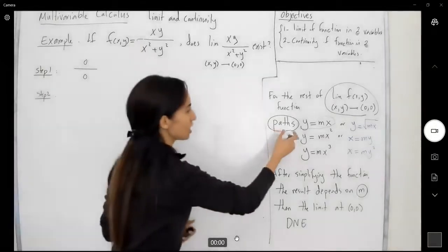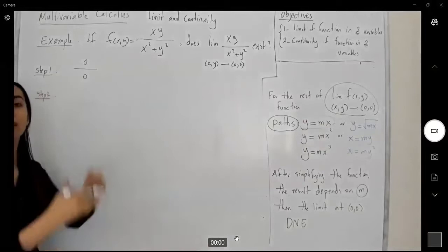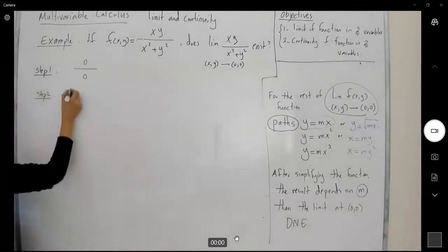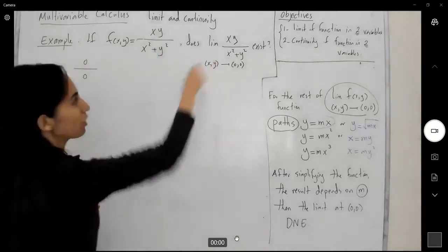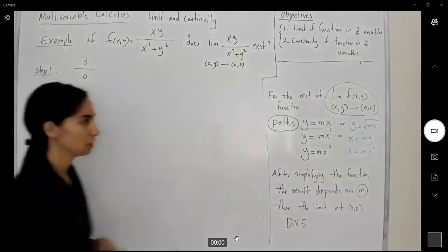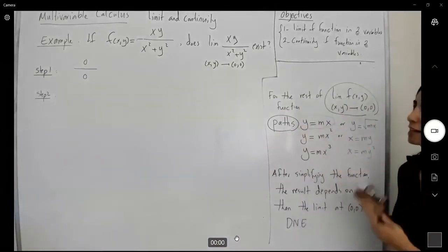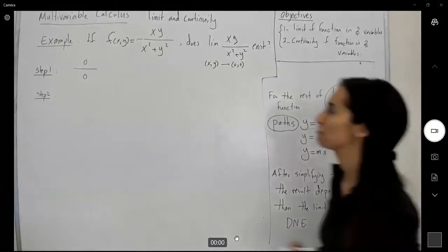We're going to choose a path, a general path, simplify the function, get rid of one of the variables, and try to analyze the outcome. So here you have f(x,y) which is xy over x squared plus y squared. Let us choose one of these general paths that helps us simplify this function.